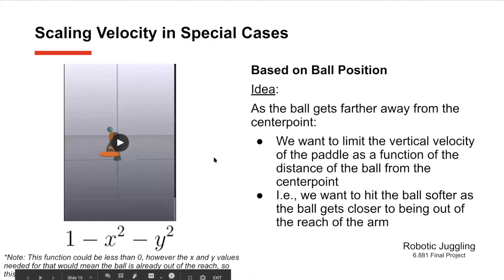So how do we fix this? We can scale our vertical commanded velocity of the paddle by the x and y position of the ball offset from the center point. Basically as the ball gets farther from the center point we want to scale down our commanded z velocity to bring the ball back towards the center point. We do this with a radial function of 1 minus the x offset squared minus the y offset squared. So let's take a look at this. It's softer and then as it gets towards the center you can see it bounce a little higher.